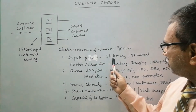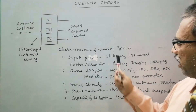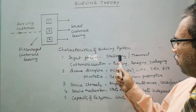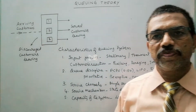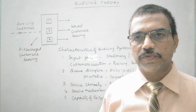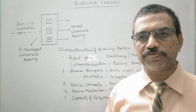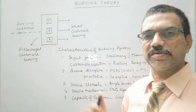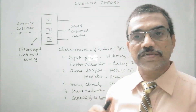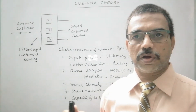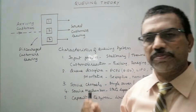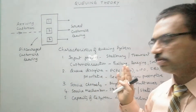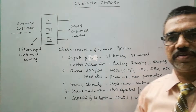Coming to the state, the input process may be stationary or transient. In some cases we may observe the stationary state, in some cases it may be transient, and in some queuing systems we may observe both. Now let us see what stationary and transient state mean.